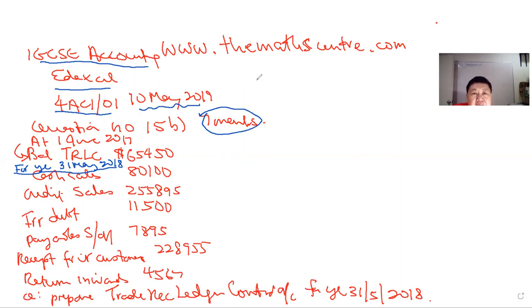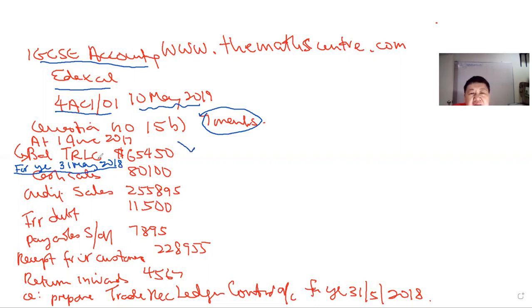Thank you very much for your likes — it helps us. This is question number 15B on the exam paper. It says: as of 1 June, we have a balance in the TRLC — that stands for Trade Receivables Ledger Control, also called the Sales Ledger Control Account. They are the same thing.